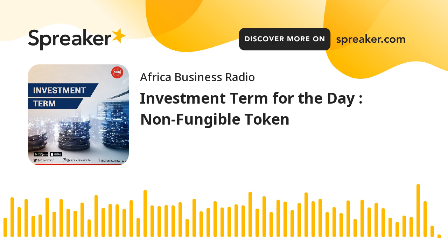Like physical money, cryptocurrencies are fungible — that is, they can be traded or exchanged one for another. For example, one bitcoin is always equal in value to another bitcoin. Similarly, a single unit of either is always equal to another unit. This fungibility characteristic makes cryptocurrencies suitable for use as a secure medium of transaction in the digital economy.